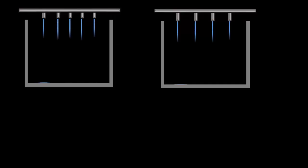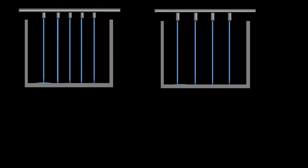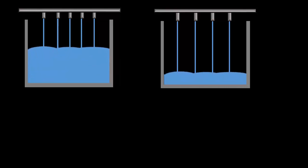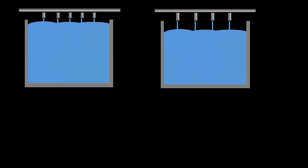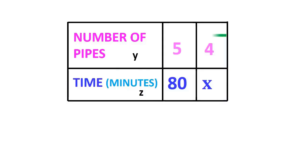Five pipes are required to fill a tank in 1 hour and 20 minutes. How long will it take if only four pipes of the same type are used? Let the desired time to fill the tank be x minutes. As the number of pipes decreases, the time required to fill the tank increases. So, this is a case of inverse proportion.